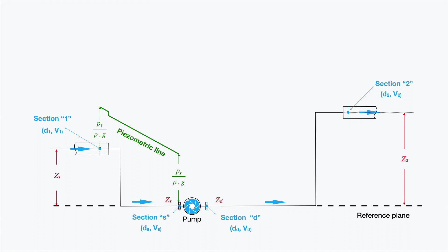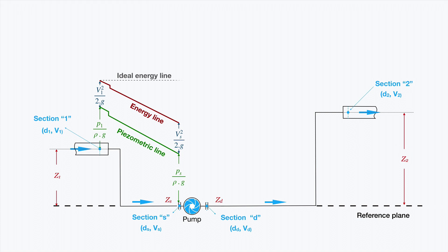What other term do we have to consider regarding the energy equation? Velocity or kinetic energy at section 1, and the kinetic energy at section S — that is, the square of velocity at section S divided by 2 multiplied by the acceleration of gravity. We can also draw the energy line. Of course, we have energy losses, so the line is not ideal. Here we will have pressure losses HL between section 1 and section S.